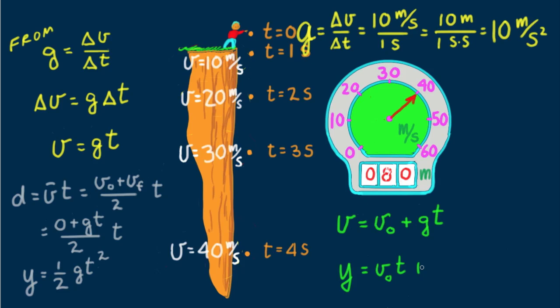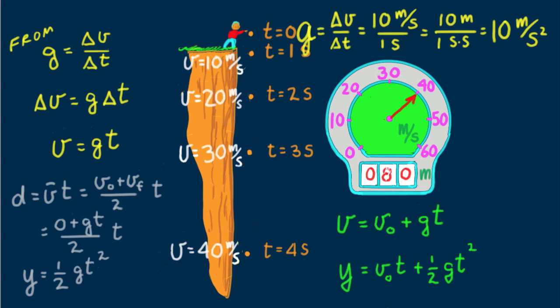And instead of distance y equals 1 half gt squared, we add y equals initial speed times time. So the falling distance will be that due to an initial speed plus the distance it would fall due to acceleration. Getting back to falling from rest, initial velocity is 0, I leave you with three questions.